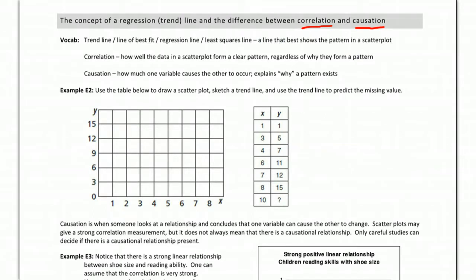So let's hit some vocab real quick. We have a trend line, which is also called a line of best fit, which is also called a regression line, which is even sometimes called a least squares line or least squares regression line. So it has a lot of different names, but all it is is a line that shows the pattern in a scatterplot. If you have a bunch of points in a scatterplot and you draw a line that kind of fits that pattern, you could call it one of these things.